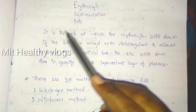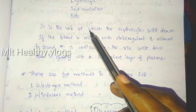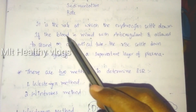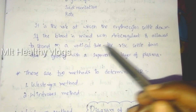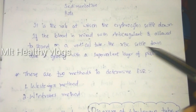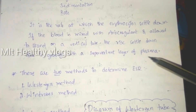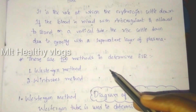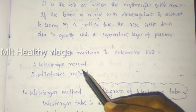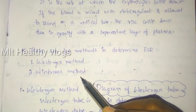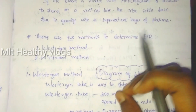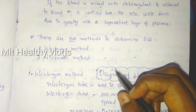Erythrocyte sedimentation rate is the rate at which erythrocytes settle down when blood is mixed with anticoagulant and allowed to stand in a vertical tube. The RBCs settle down due to gravity, with the supernatant fluid being plasma. There are two methods to determine ESR: the Westergren method and the Wintrobe method.